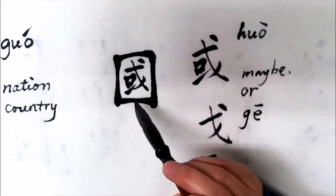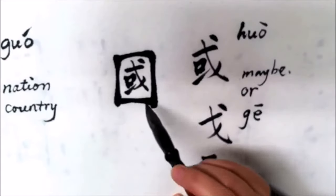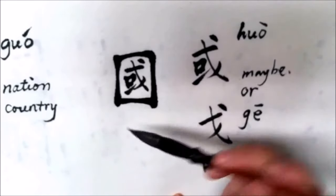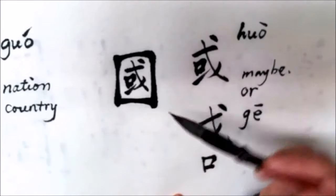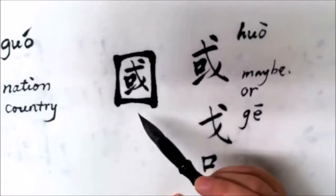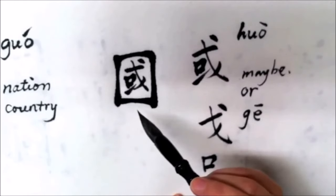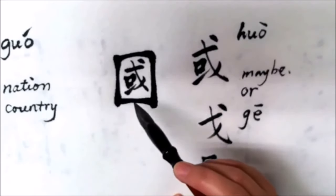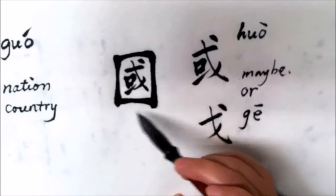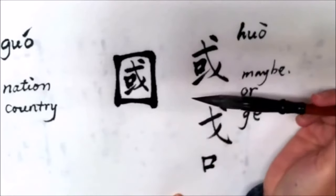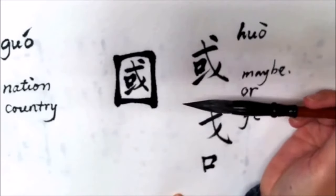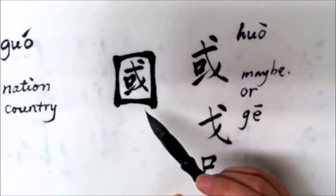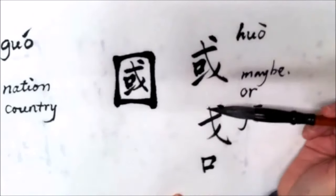国 (guó) means country or nation. Hope this video will help you remember the traditional writing of 国 (guó), which means nation or country. Thanks for watching. I will see you soon. Goodbye.